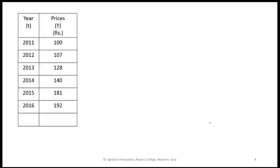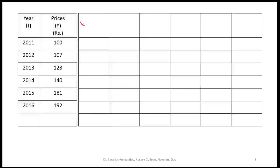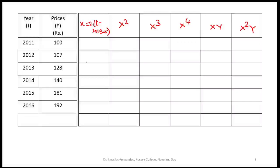Going to the table: x = 2(t − 2013.5). For t = 2011, x = −5; for 2012, x = −3; for 2013, x = −1; for 2014, x = 1; for 2015, x = 3; for 2016, x = 5. So summation(x) = 0. Summation(y) = 100 + 107 + 128 + 140 + 181 + 192 = 848.